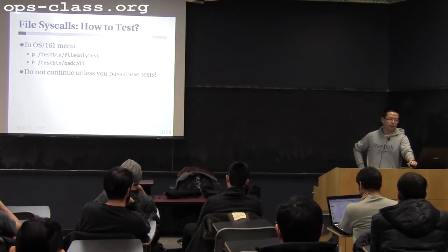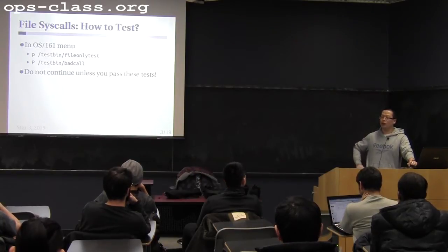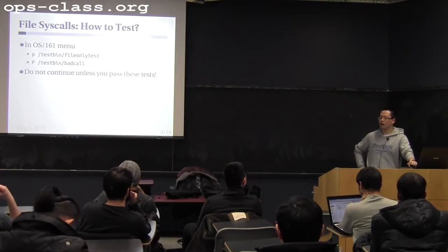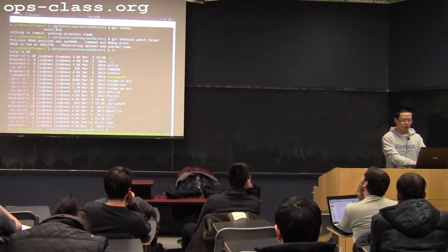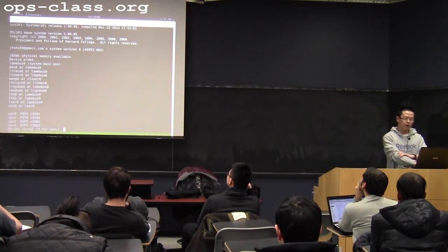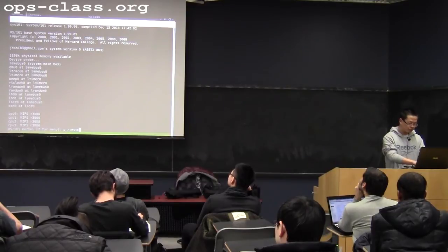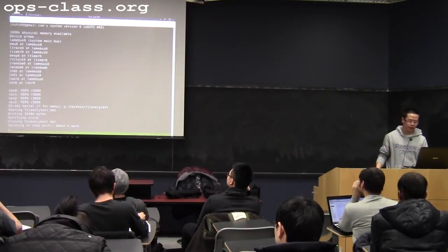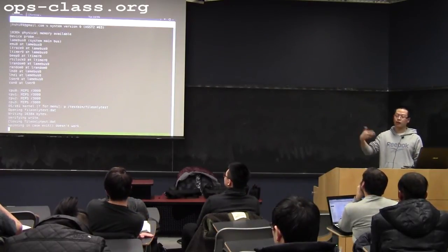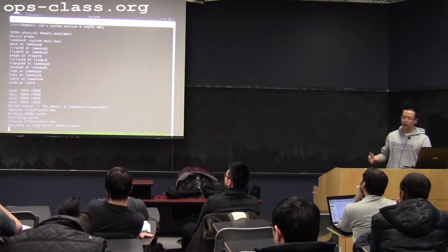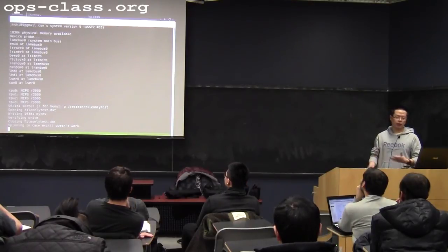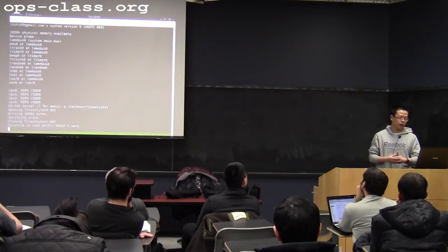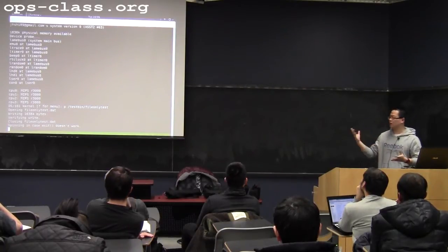Then there is another test program called bad call, which will give you all kinds of bad arguments to stress-test your argument checking. You want to pass both tests before you do the process syscalls. I'll show you the correct output of these tests. In the kernel menu, the first test I want to do is test/bin/filetest. You'll see output like this: it opens a file, writes to that file, reads that file, and then closes it. This test program won't return to the menu — it says 'spinning in case exit doesn't work' — so it just uses a while(1) loop to avoid calling exit, because you may not have that ready at this point.